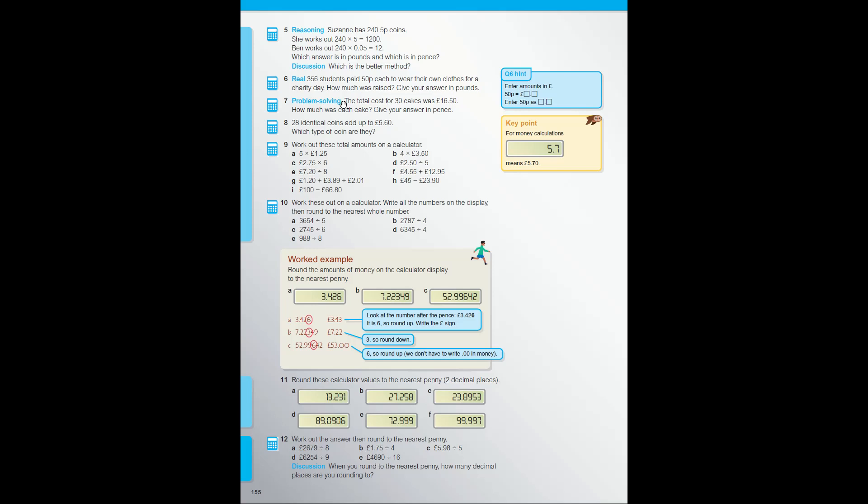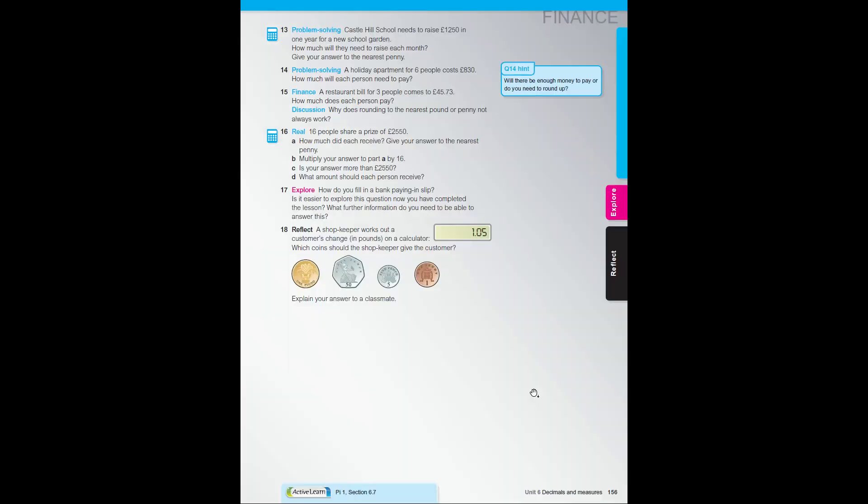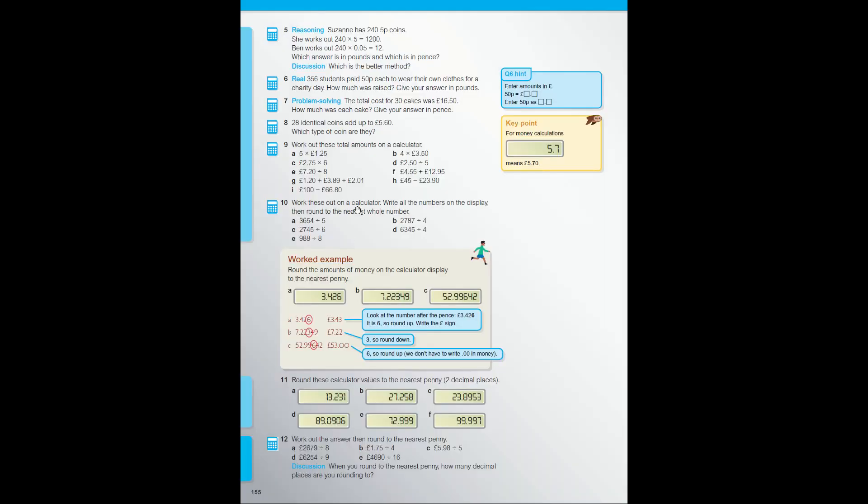Questions for you: start from question 6, we've already done question 5. Work your way through, then turn the page and work up to question 18 reflection question. Now what I want you to remember is for each question you can use your calculator, but you have to state in your solution what you're calculating. Don't just give me the answer - are you dividing, are you multiplying? Let me know.